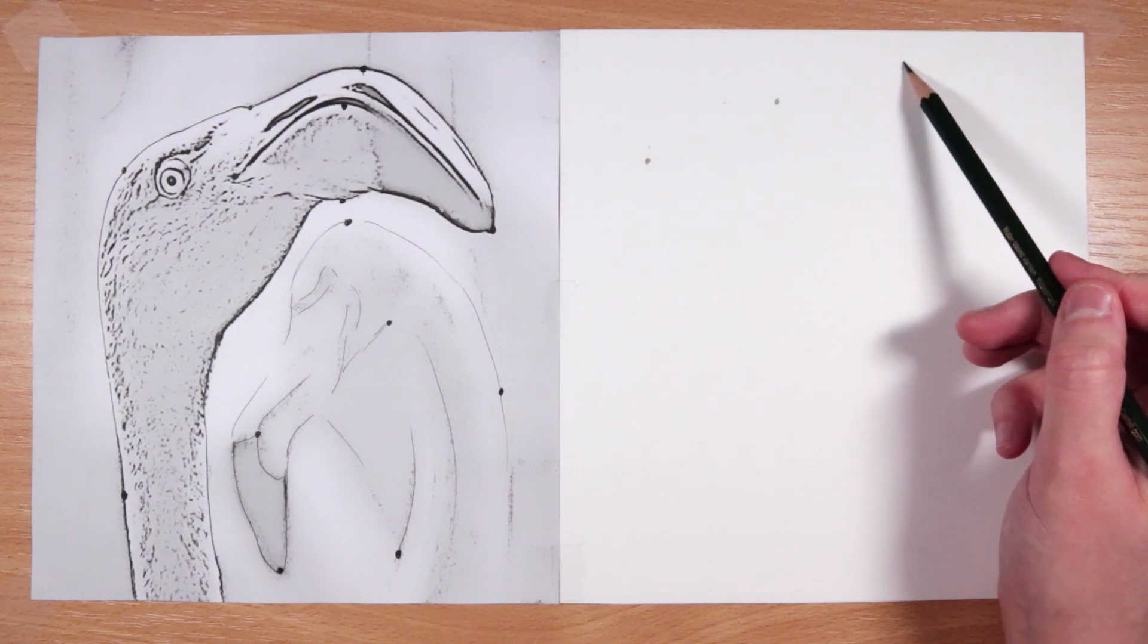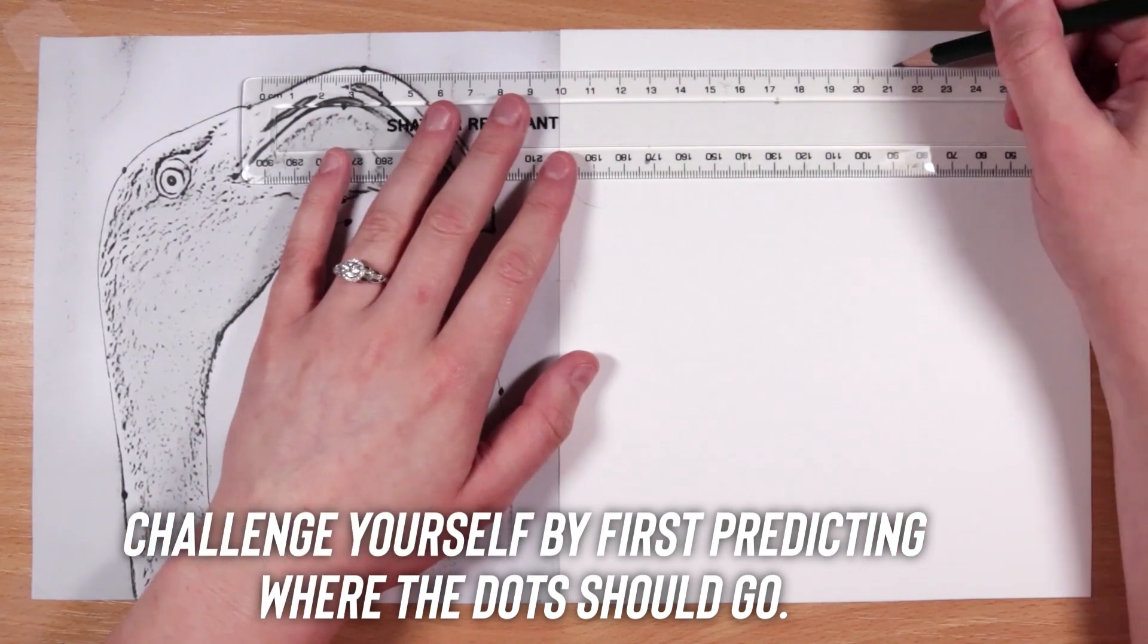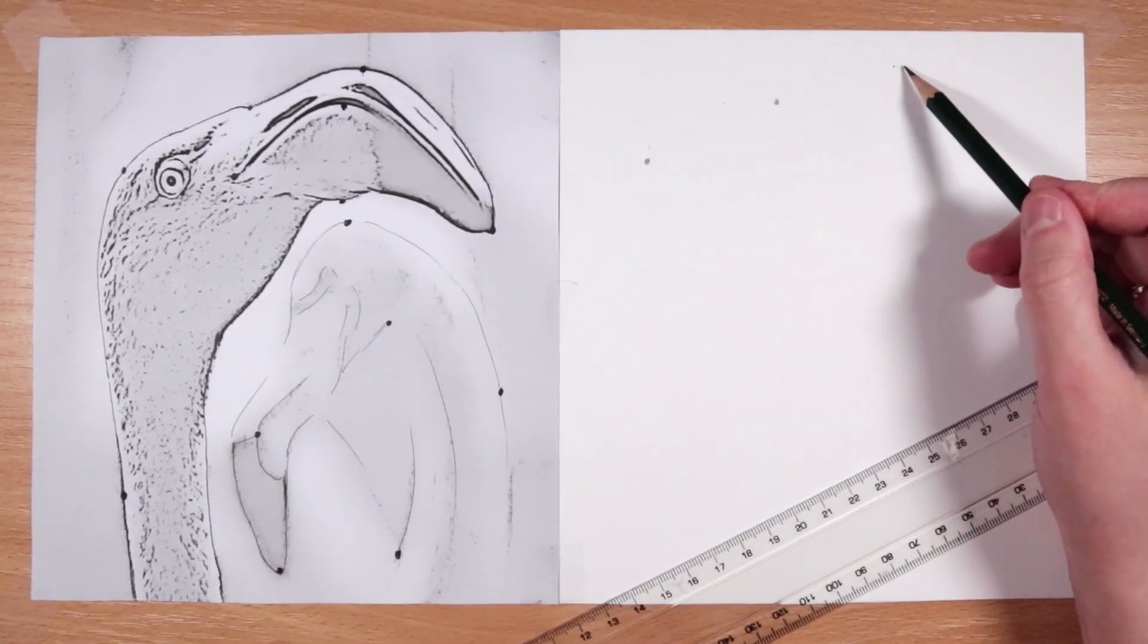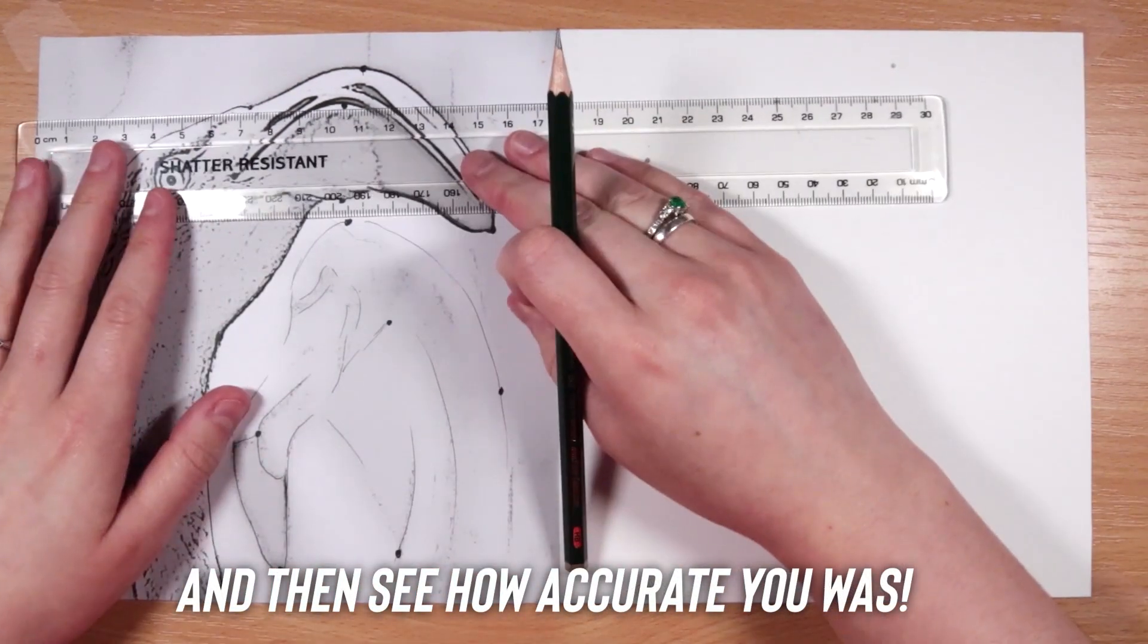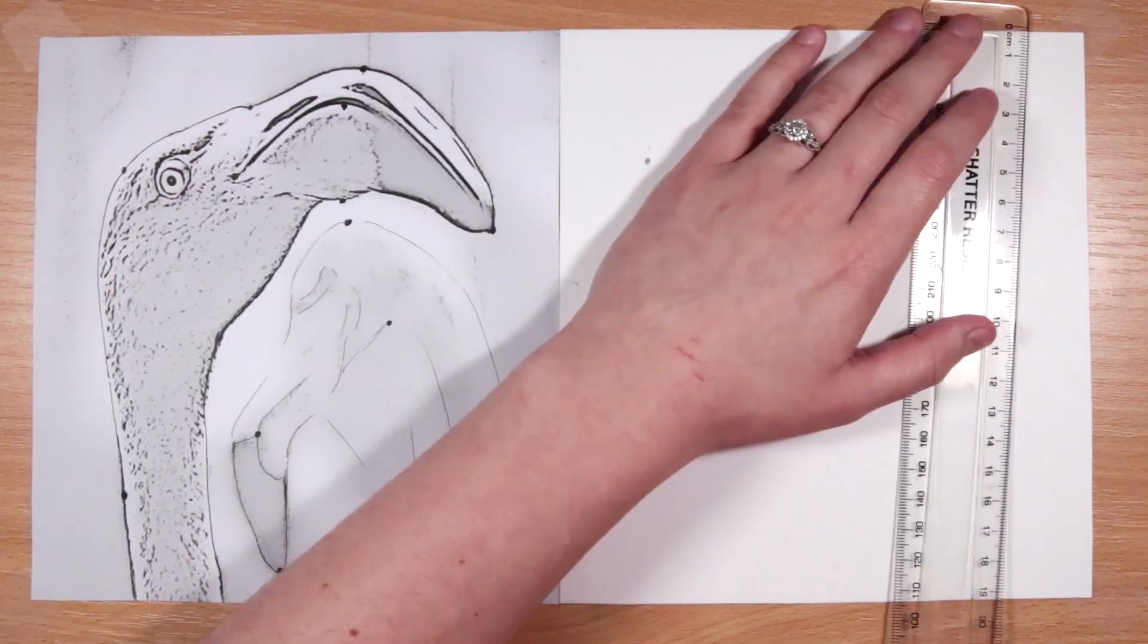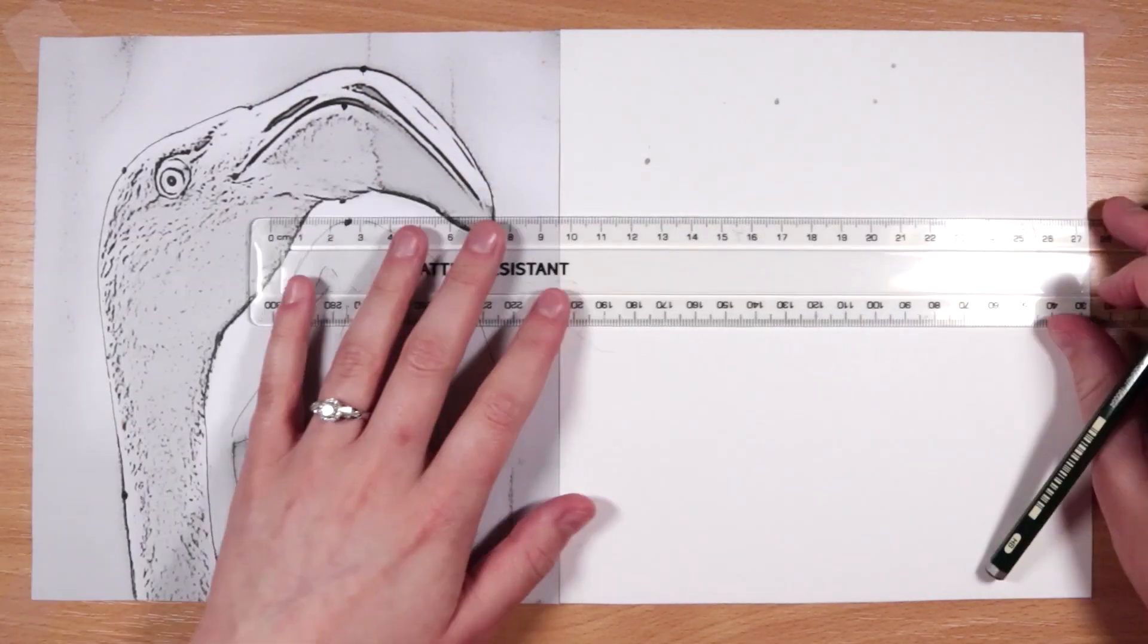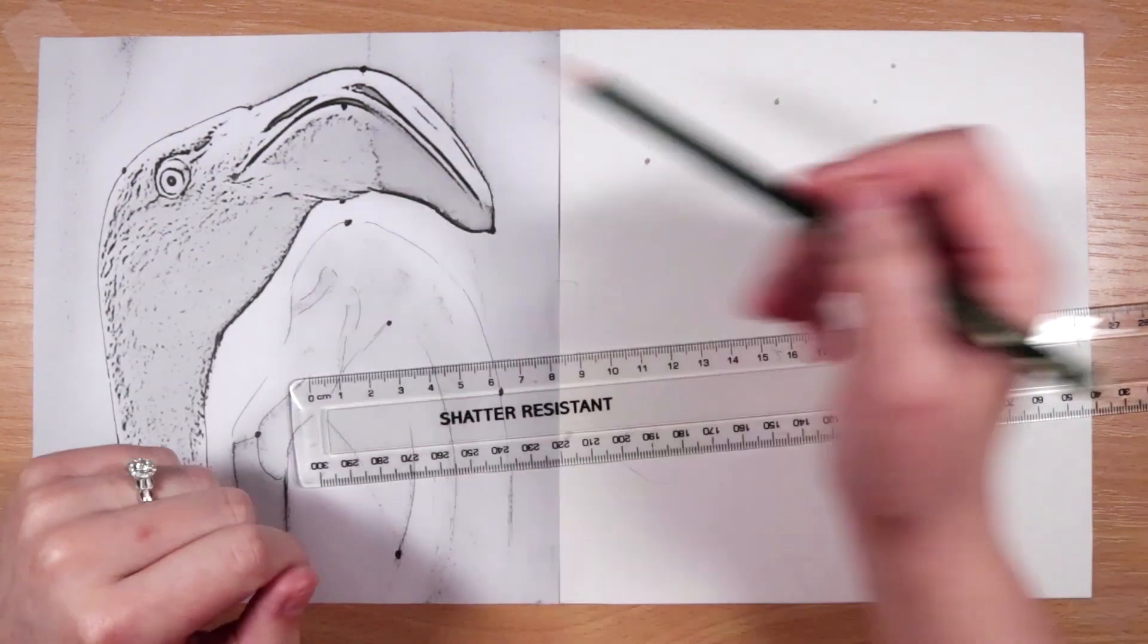One thing I'd recommend is to challenge yourself by first predicting where you think that reference point should go. In your mind, look at that point. Think, where do I think that's going to go on the paper? Then see how accurate you actually are by measuring it out and seeing how far off your points were. As you get more and more accurate, you can start to use less and less points until it gets to a point where you only need a couple of reference points to help you out at the start.